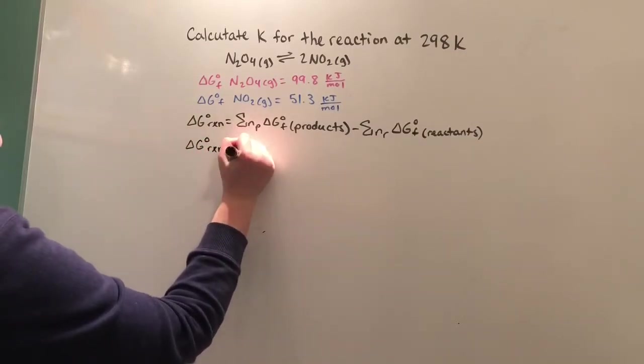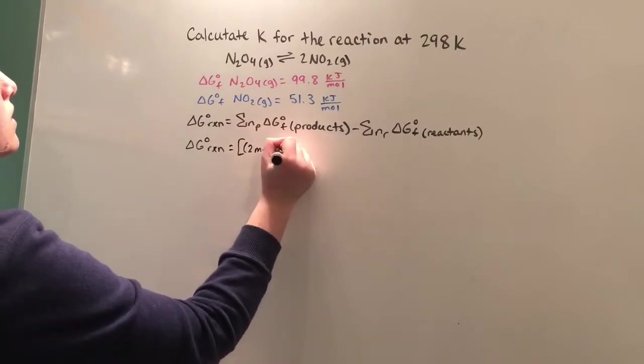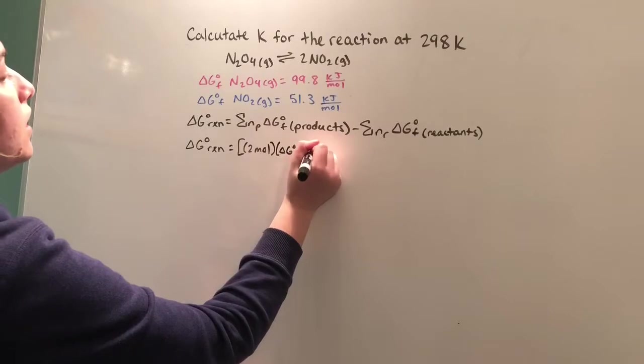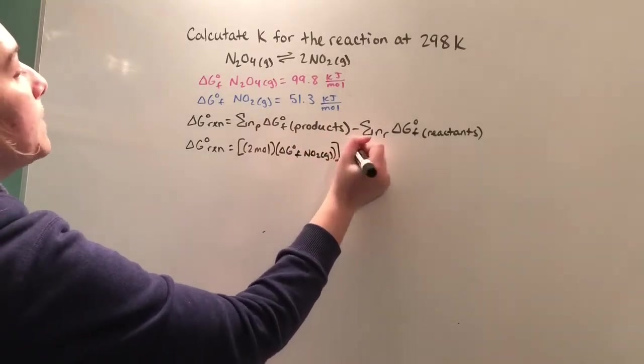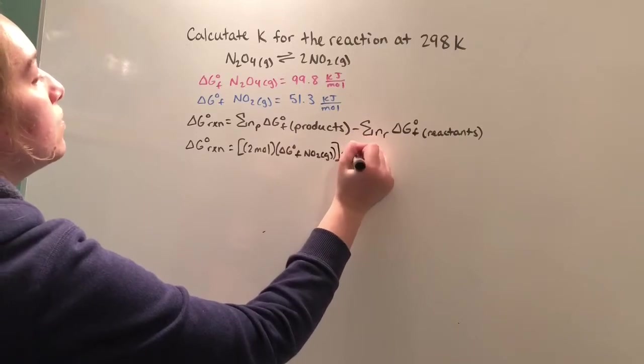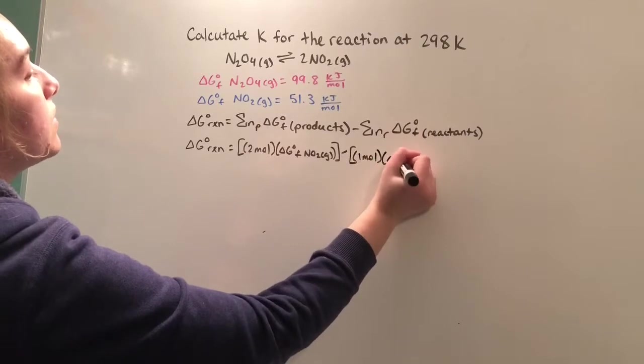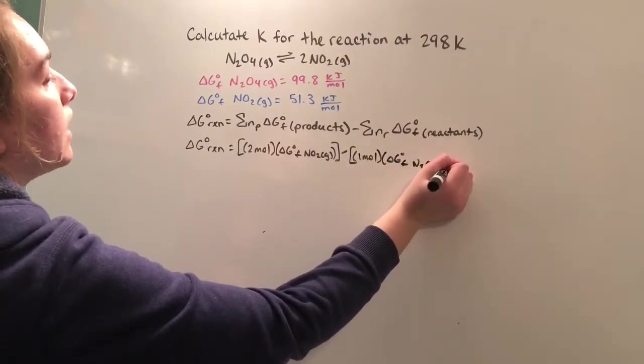So the ΔG reaction is going to equal two moles times the ΔG formation of NO₂ gas minus one mole times the ΔG of formation of N₂O₄ gas.